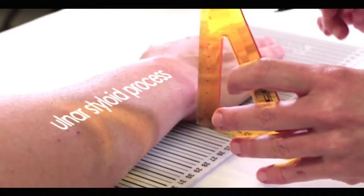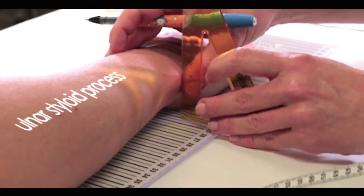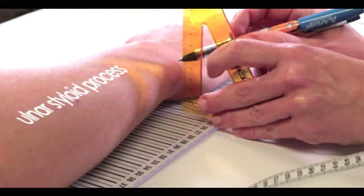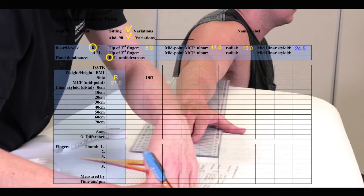Feel for the ulnar styloid process at the wrist and mark the midpoint. This is the zero centimeter point for reference. Record the position on the board on the arm measurement form. In this case, it is 24.5 centimeters.